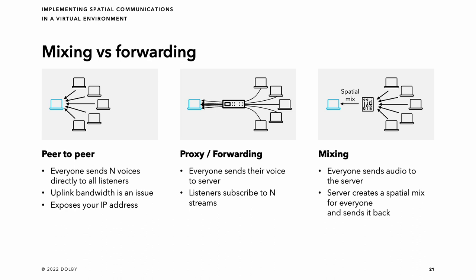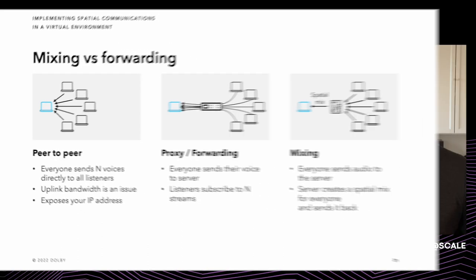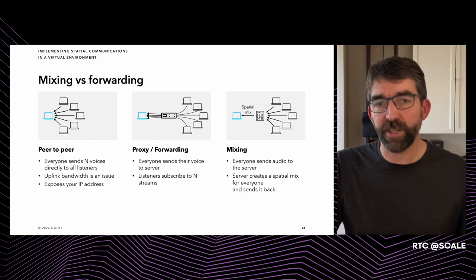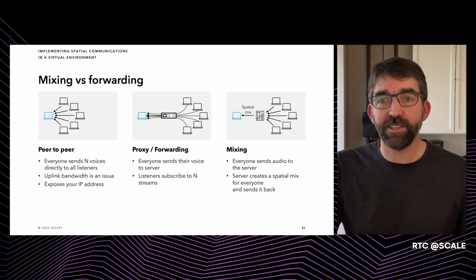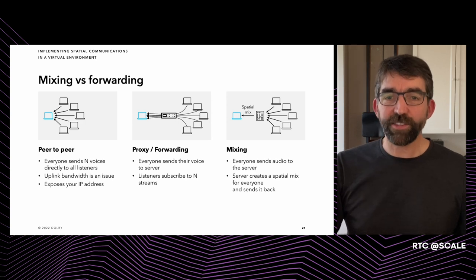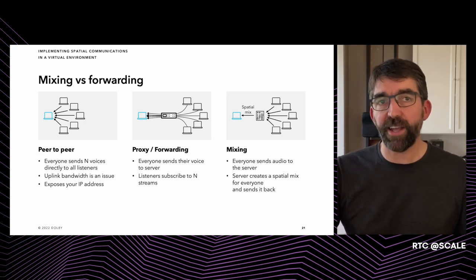I want to talk about different network and server options for real-time communications delivery. There are three main delivery architectures: peer-to-peer, forwarding or proxy, and mixing. With peer-to-peer, each user sends their real-time audio directly to each listener who can hear them, and voices are rendered locally. This has two main issues: upstream bandwidth usage, and more importantly, it exposes your IP address to anyone who can hear you in the virtual environment — a major security issue. Most consumer services have moved away from peer-to-peer. When Skype was peer-to-peer, gamers were often the subject of denial of service attacks because their IP addresses were exposed.